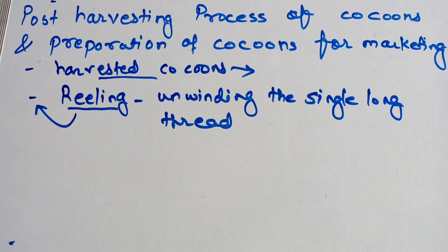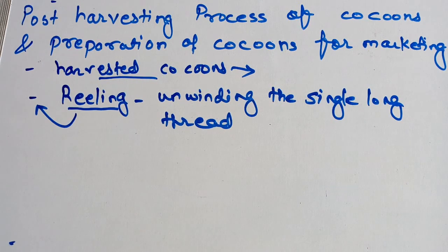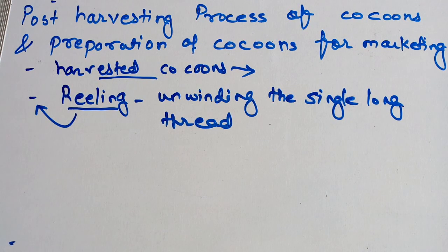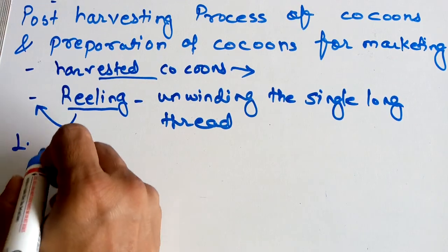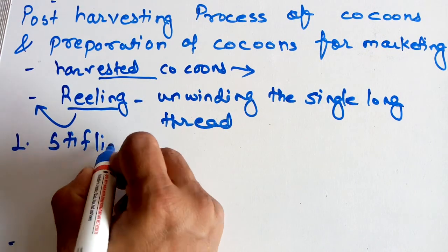Those steps are used before the reeling process. And there are many other methods that take place after the process of reeling — for example, re-reeling, twisting, and finishing. When the cocoons are collected, sorted, and good quality cocoons are selected, we proceed with the process of reeling, starting from the first step, which is stippling.